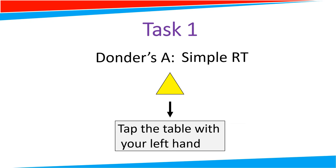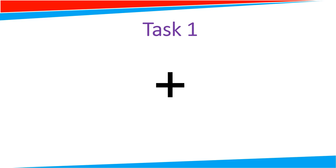So to start with simple reaction time, whenever you see this yellow triangle, please tap the table in front of you with your left hand and you must react as quickly as possible after seeing this yellow triangle. Before every stimulus, I will show you this fixation cross. This means you need to get ready to react as quickly as possible.